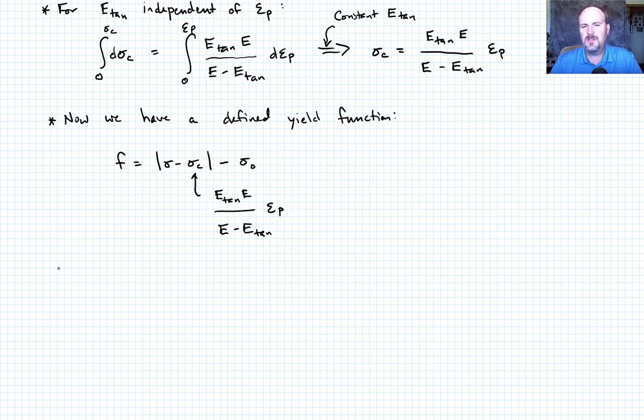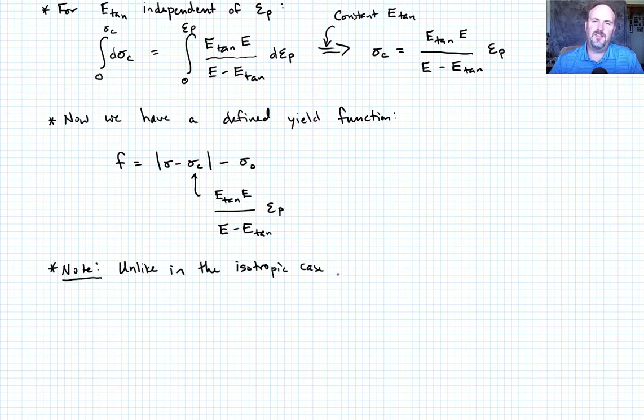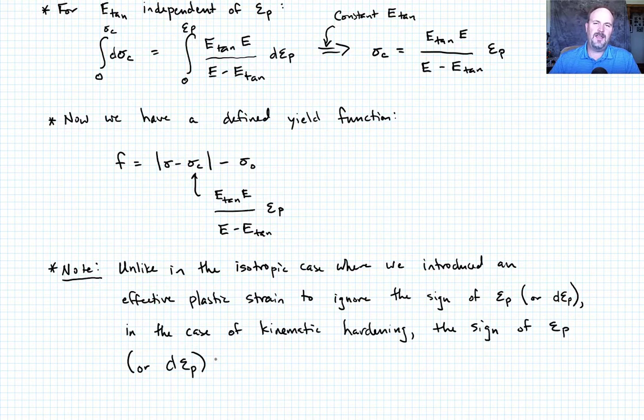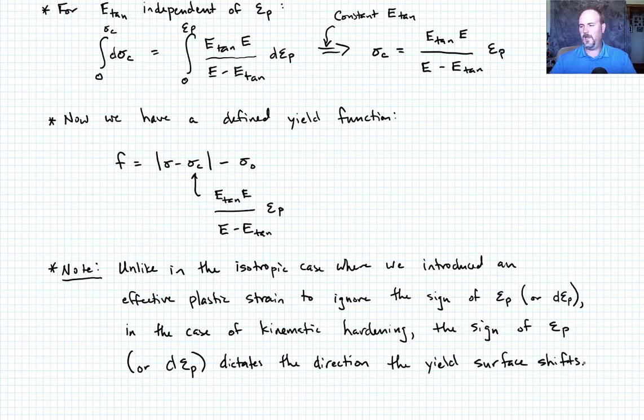One thing I want to note here, so if you remember what we did in the case of the isotropic hardening law, we tried to find ways to make either a positive strain increment or a positive plastic strain increment or a negative plastic strain increment both go towards a sort of positive increase in the yield stress. This doesn't work that way, so I want to be very clear on that. Note, unlike in the isotropic case, where we introduced an effective plastic strain to ignore the sign of the plastic strain, in the case of kinematic hardening, the sign of the plastic strain is important. It's important because it actually dictates the direction that the yield surface is going to shift.